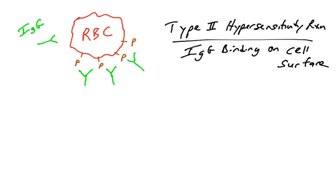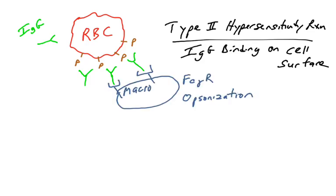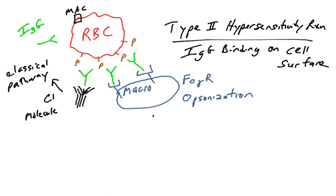It can trigger antibody-mediated opsonization. So we know macrophages, which are in the spleen, have an Fc gamma receptor. And anything covered in IgG will bind Fc gamma receptors, and the macrophages will phagocytose the red blood cells and destroy them. That's one thing that could happen.